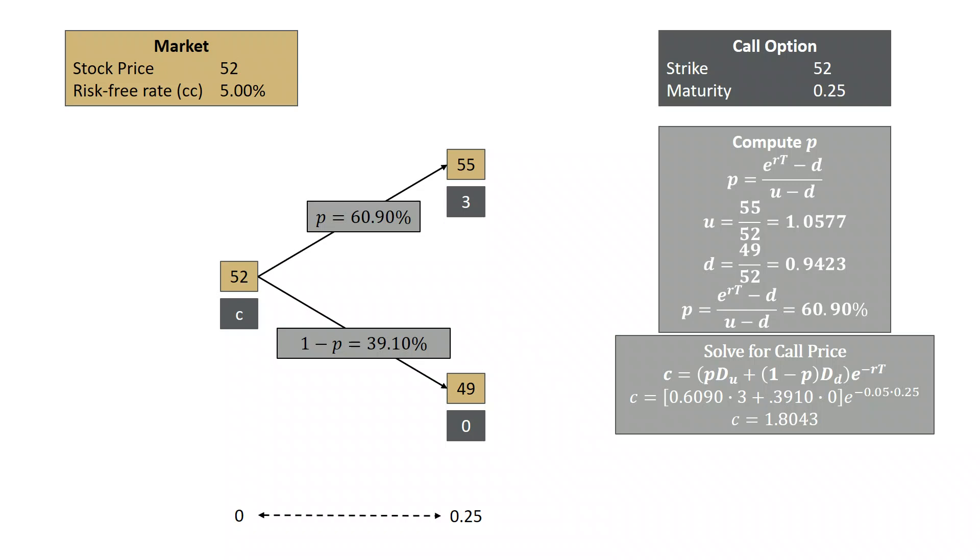Previously, we had set up a binomial tree with one step. Basically, we assumed we have this market - stock price was 52, and we assumed it could either go to 55 or 49. We knew risk-free interest rates were 5%, and we were able to price a call option with a strike of 52 and a maturity of three months under these constraints.